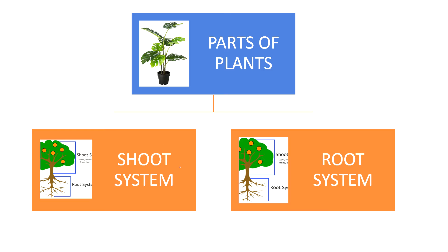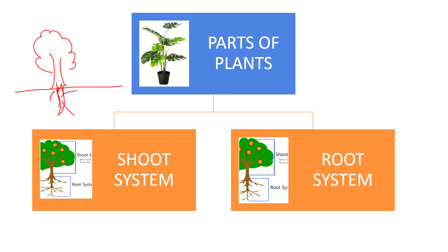So what is the shoot system? Suppose this is a plant — a tree — and this tree has roots. The upper part above the ground is called the shoot system, and the lower part below the ground is called the root system.